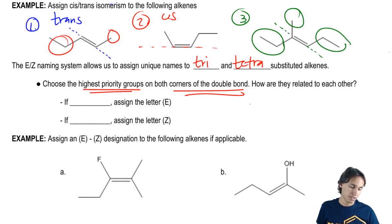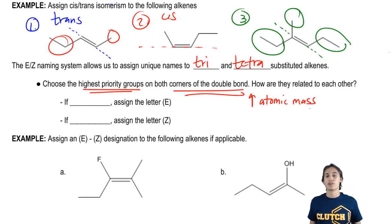What does high priority mean? It means highest atomic mass. So I'm going to try to pick the side of the double bond. I'm going to try to pick on each side of the double bond the atom that has the highest atomic mass.